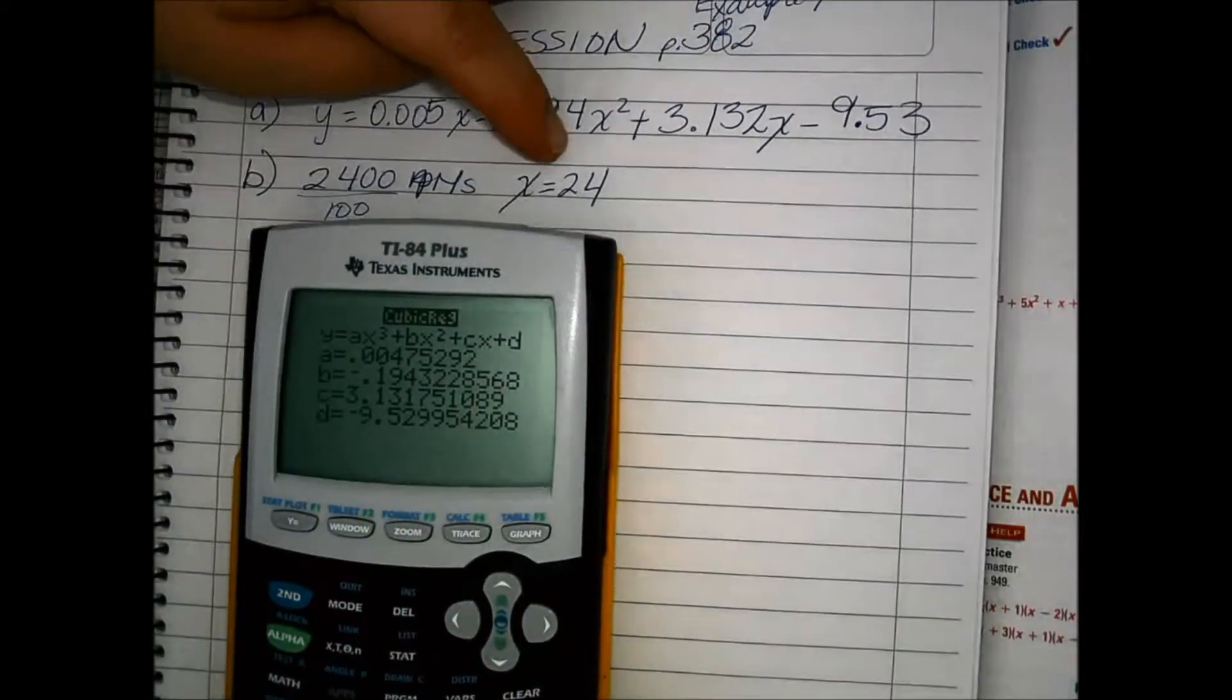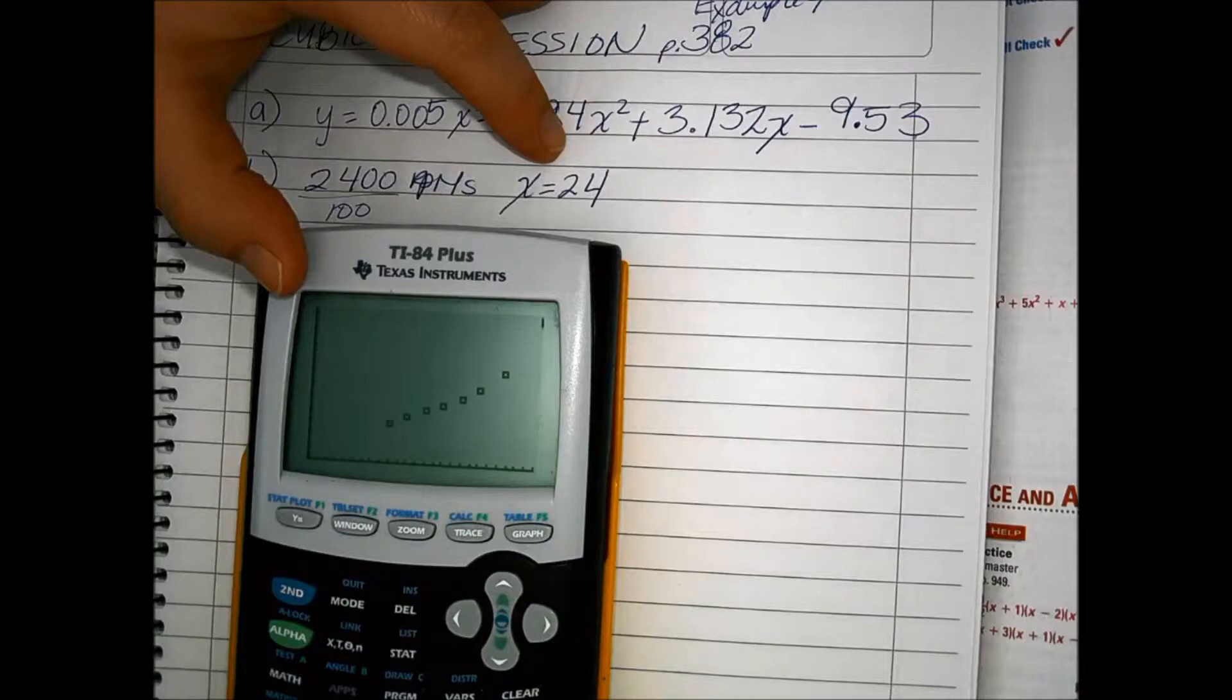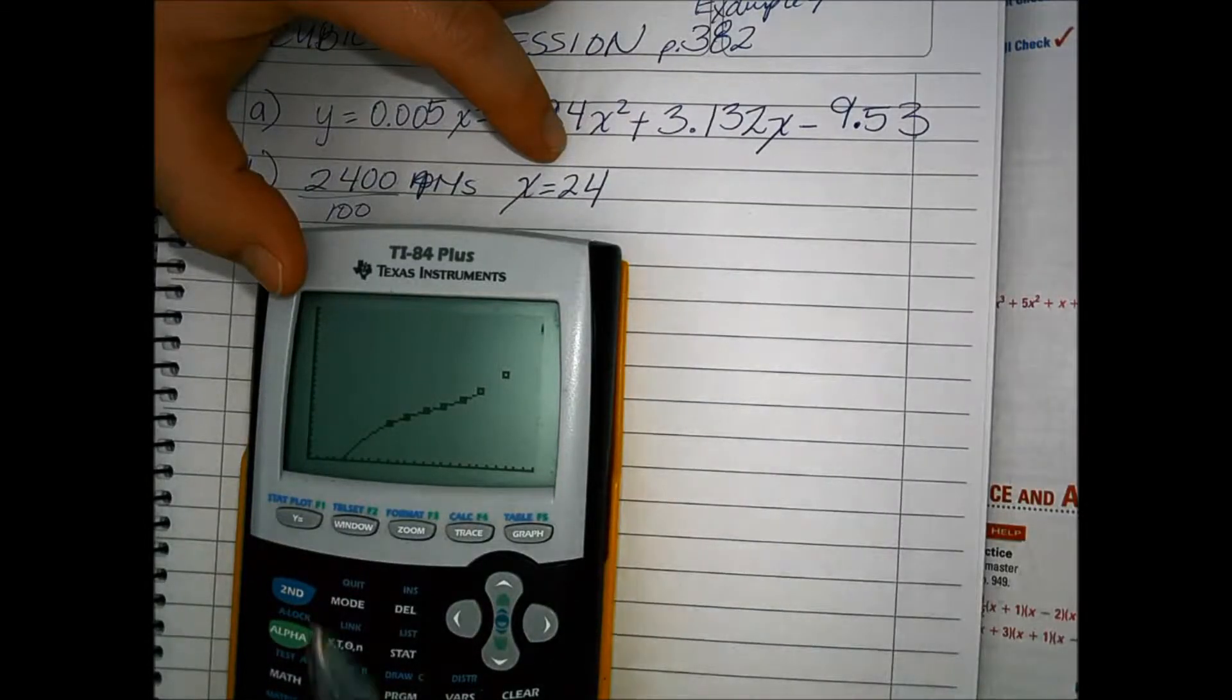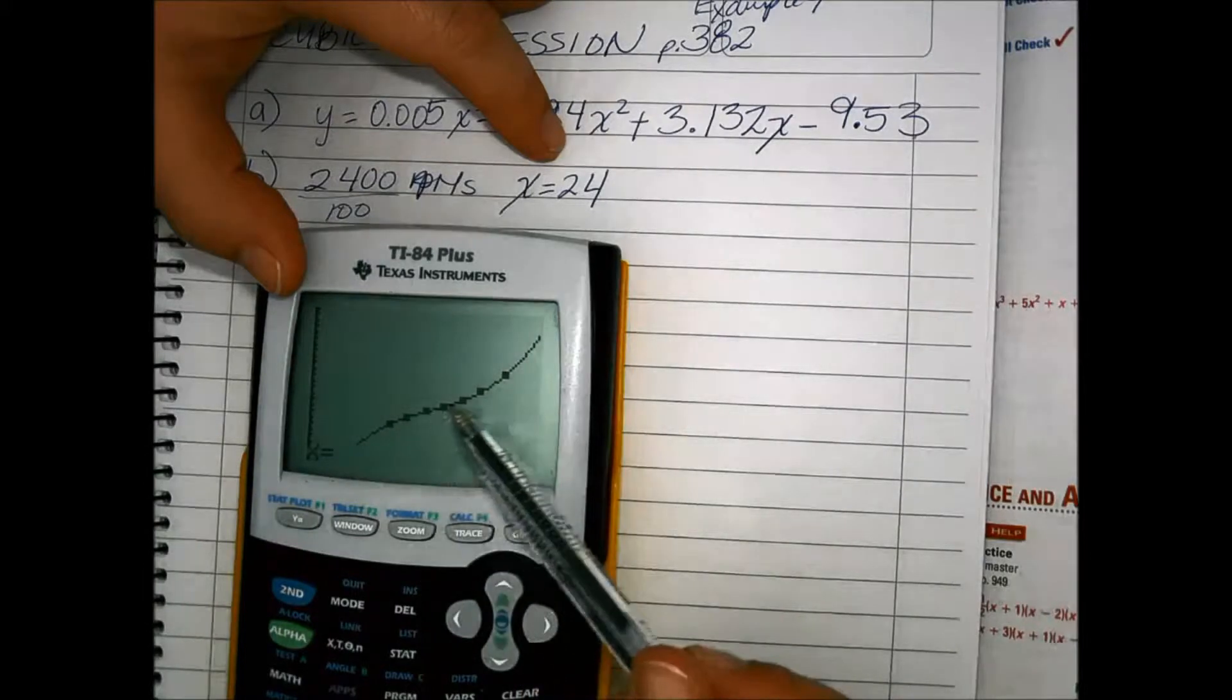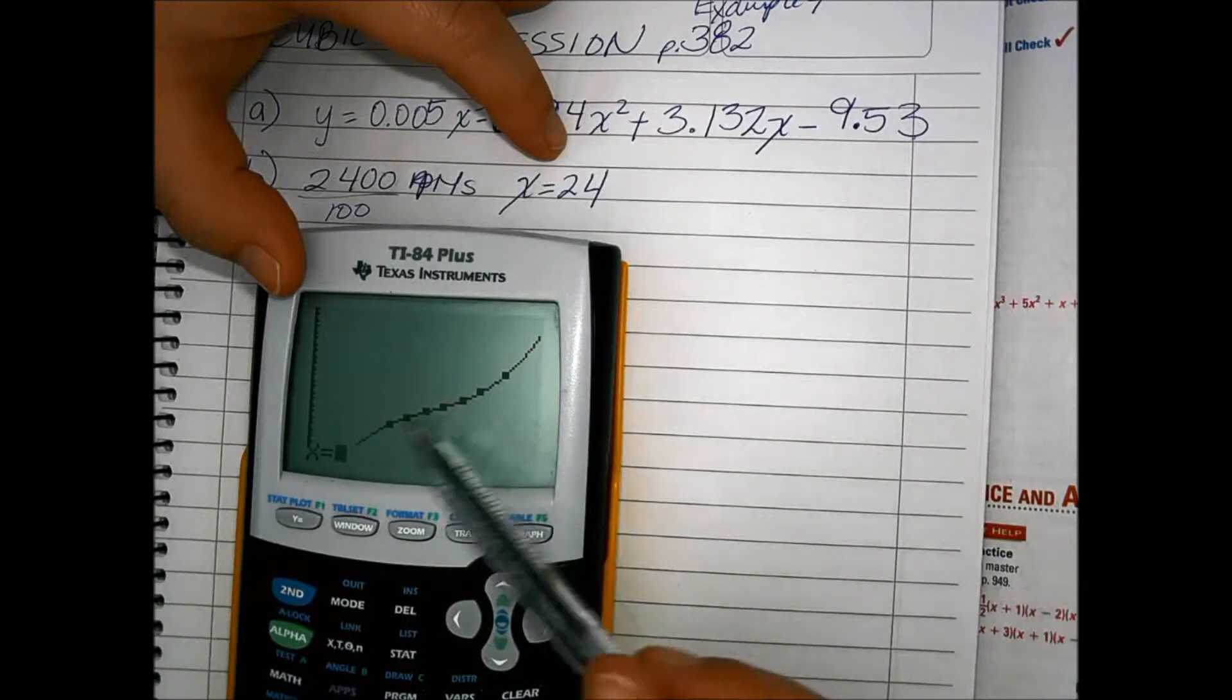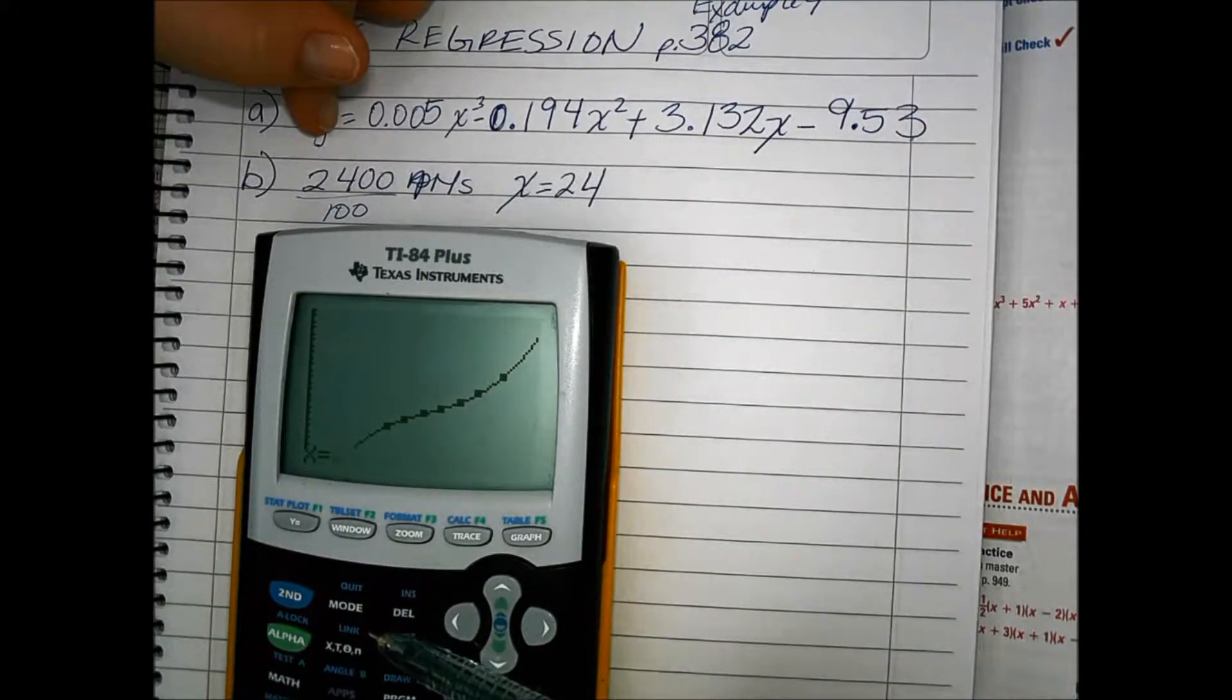Since this is the value of the function, we're going to do 2nd, trace, in our calculate menu, choose value. And you can see our value of our function going through our data. If it doesn't go through the data, then the calculator won't be able to find the value of the function.